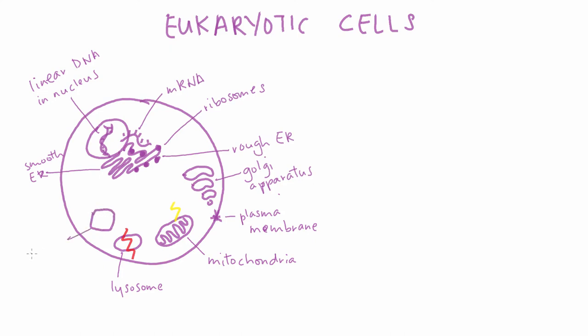Another organelle which helps to break things down is the peroxisome. Specifically, it chemically breaks down fats. In the cell, you will also find vacuoles. These water-filled organelles are used for the storage of nutrients or waste.